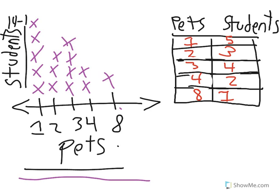Okay, so as you see, we put three x's above the two, four x's above the three, two x's above the four, and lastly, one x above the eight to show how many students have each number of pets. This is lesson 14 line.